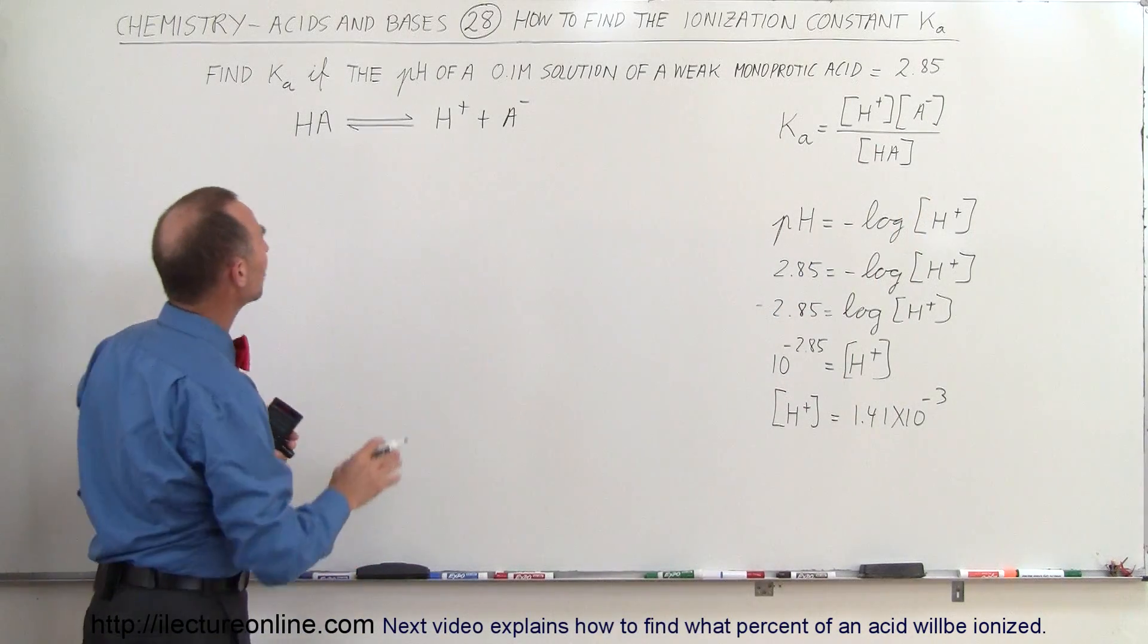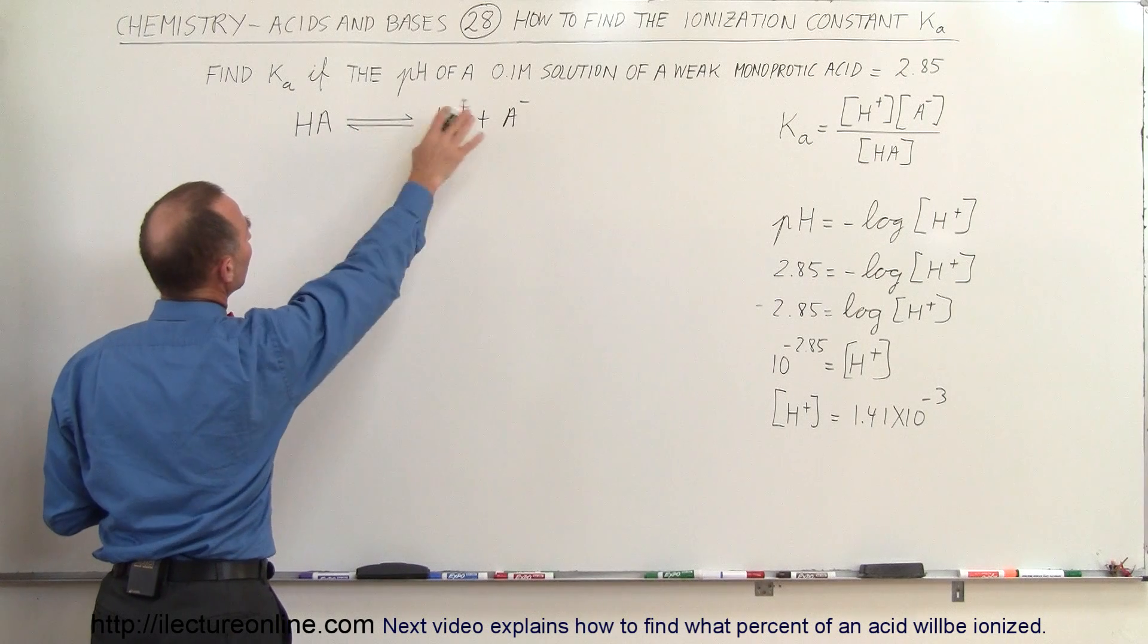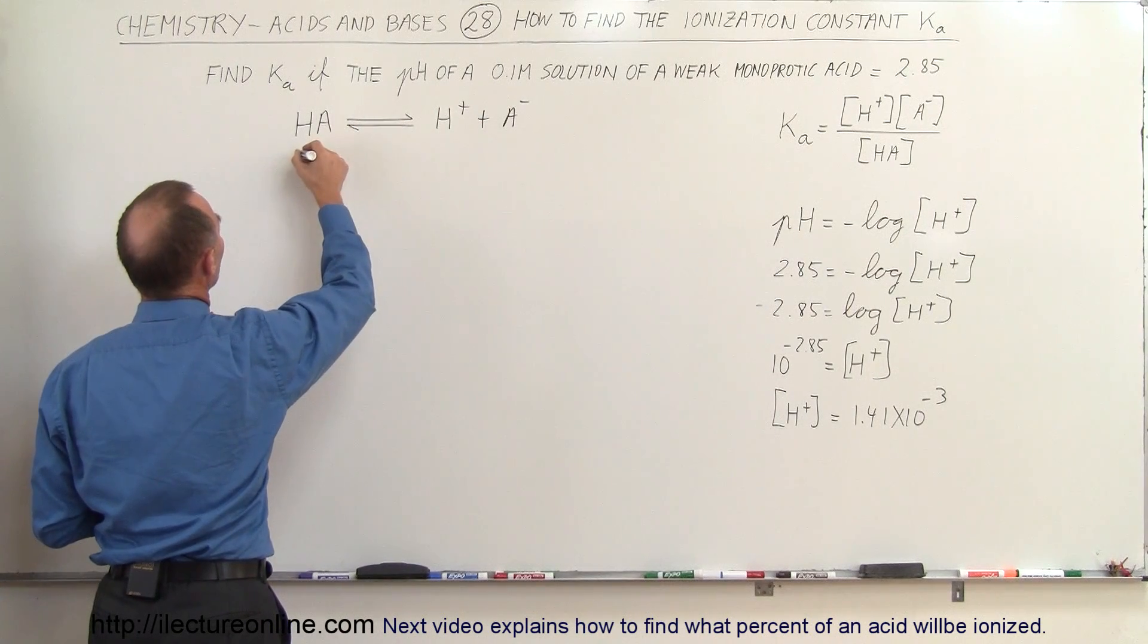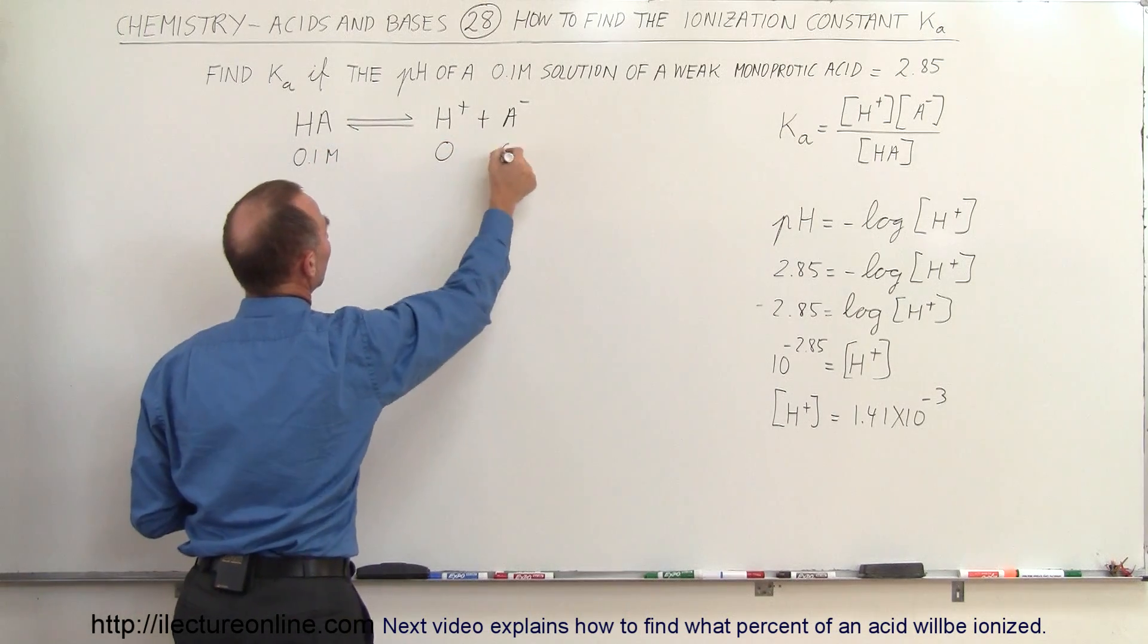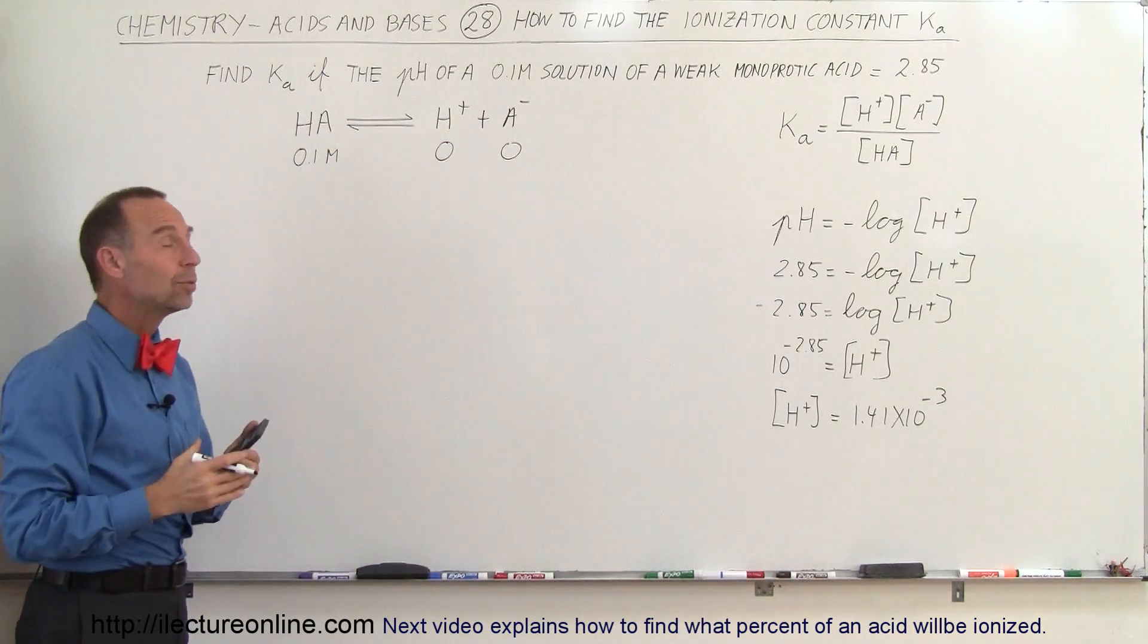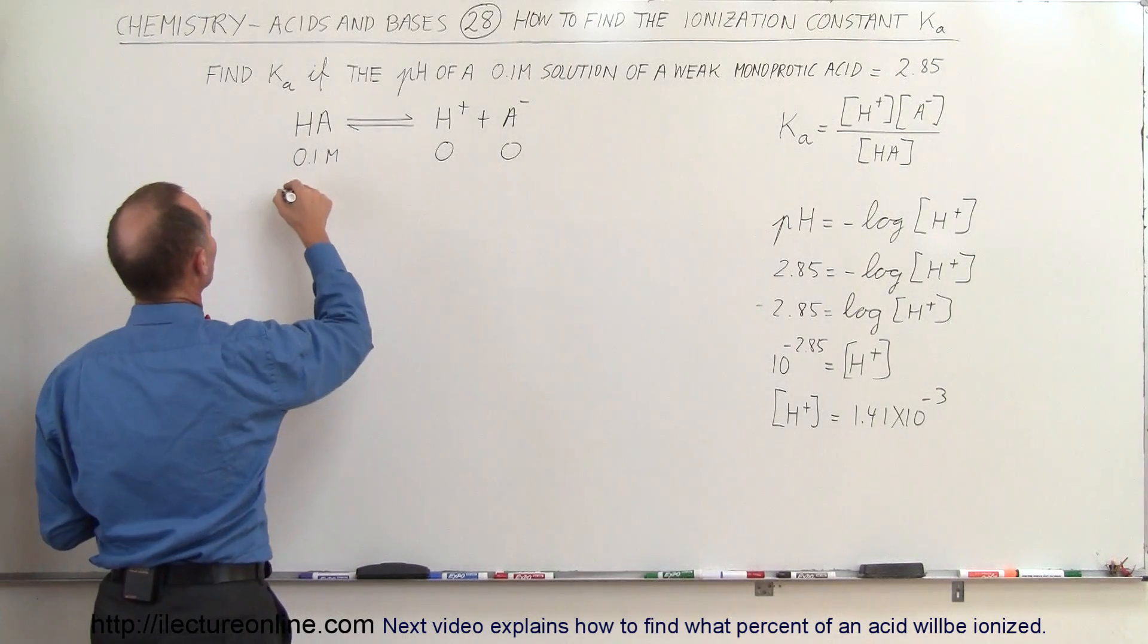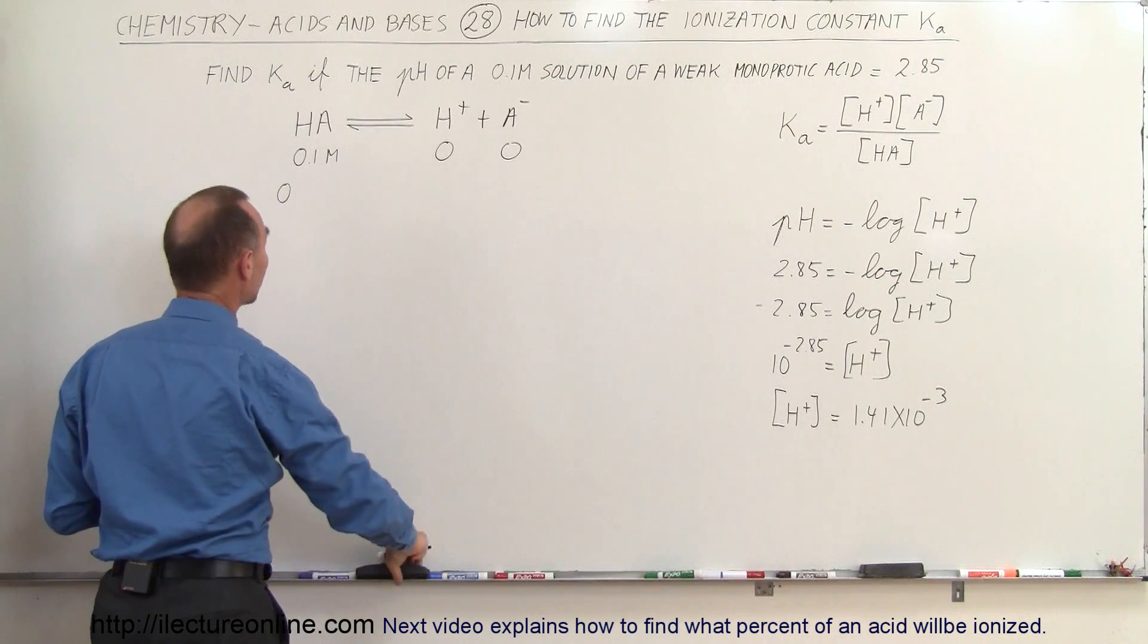Now we go to the same procedures we did before. The original concentration here would be 0.1 molar. The original concentration of this would be 0 and 0. Now when we have the ionization take place, that would then change. How much would it change?